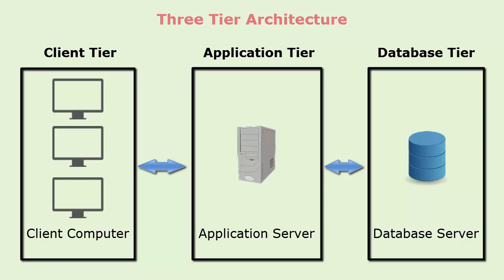N-tier architecture, also known as distributed application, is similar to three tier architecture but the number of application servers is increased and represented in individual tiers, in order to distribute the business logic, so that the logic will be distributed.